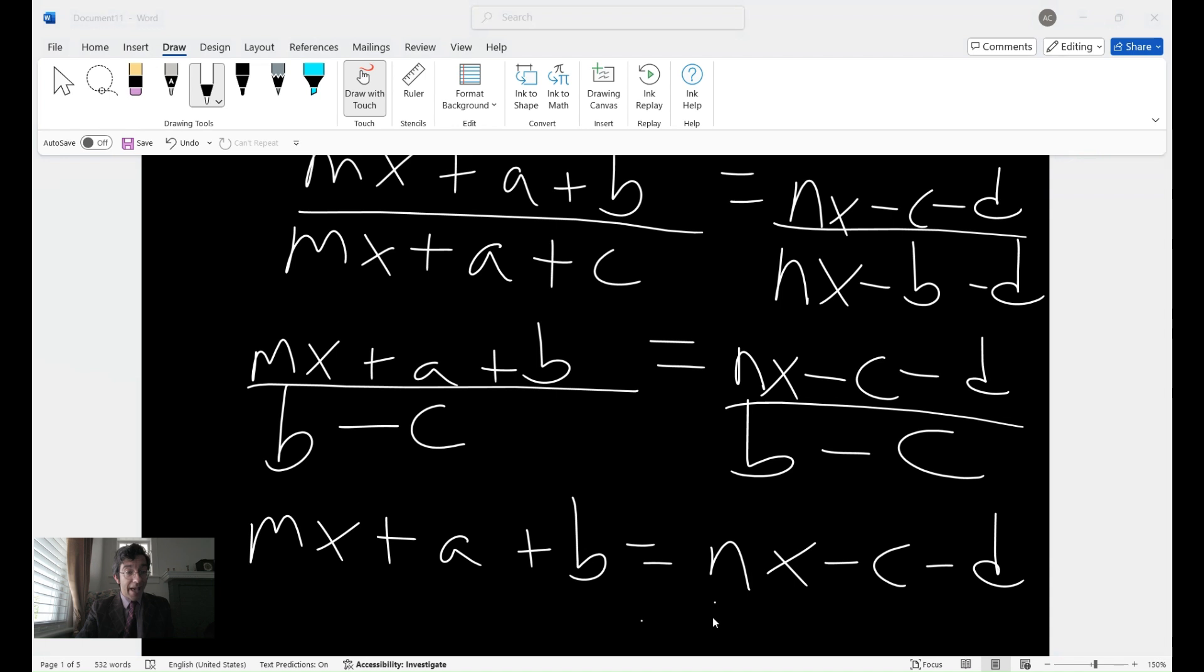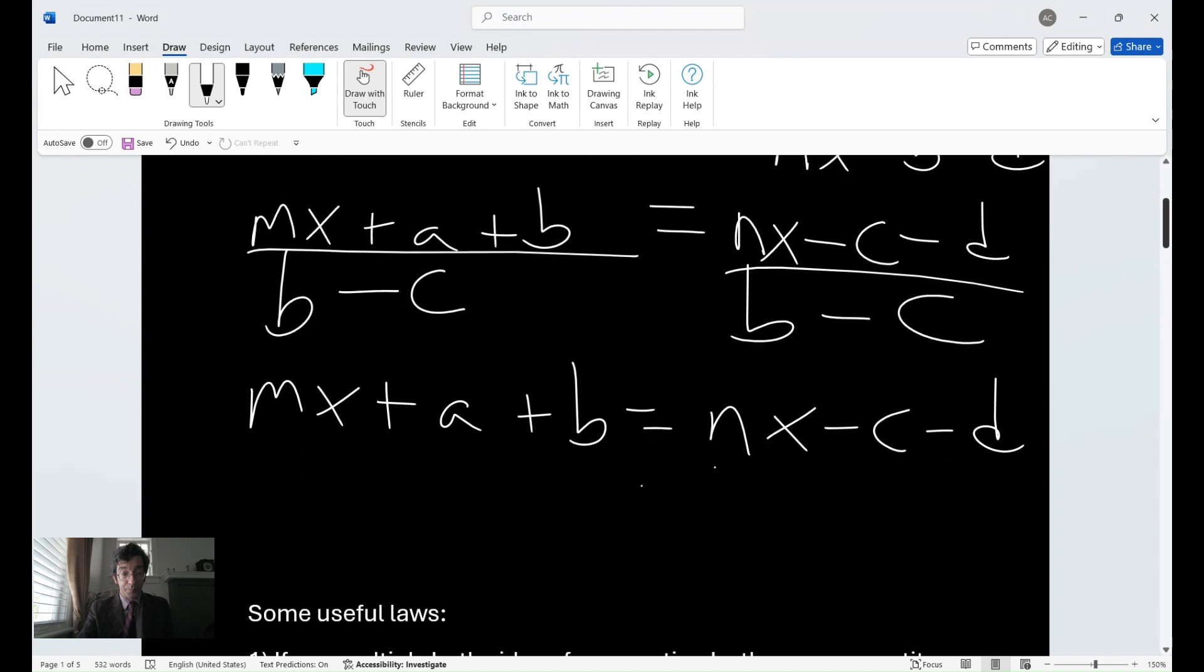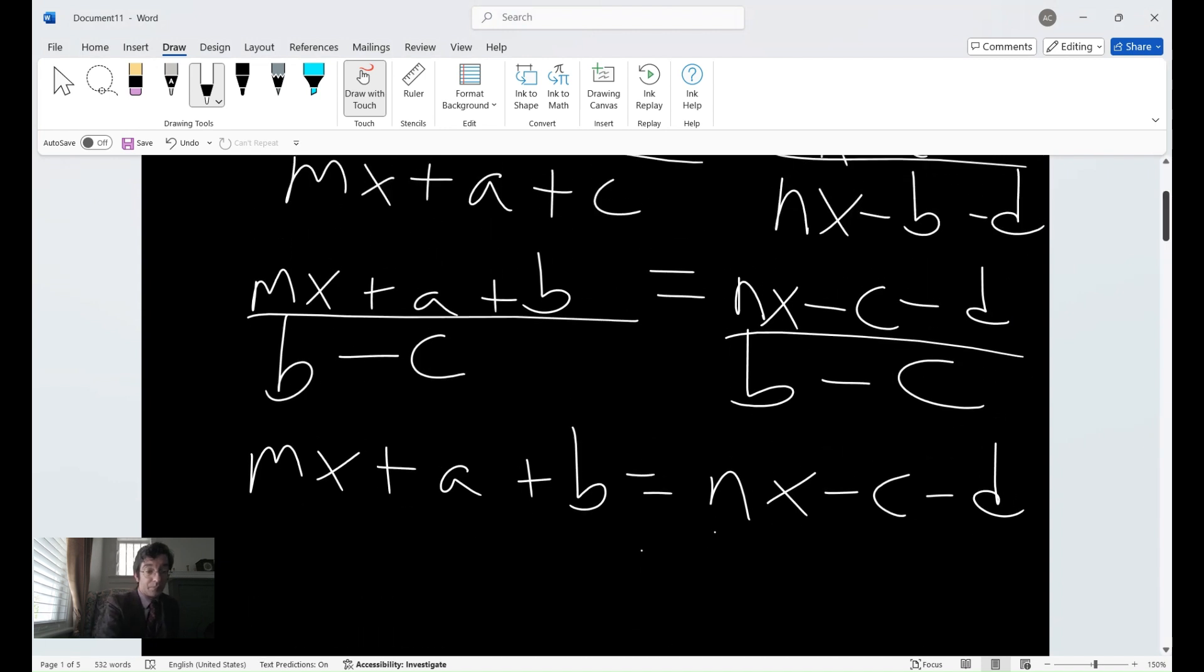And then of course, on the other side, we're going to have a b, c, and d because we've moved the n x's here. So we have negative parentheses. And we can include all our a, b, c, and d in there.